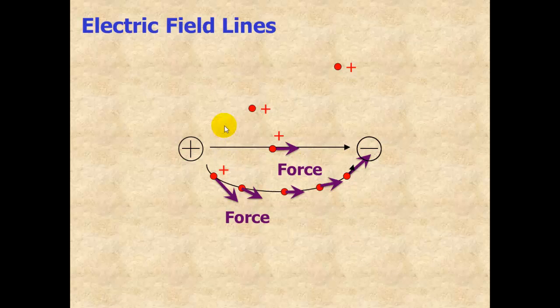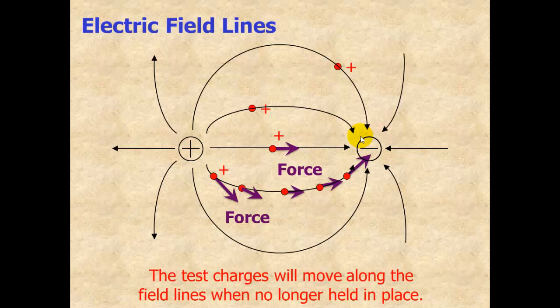By symmetry, we can see that if we put these positive test charges anywhere in this field, it's always going to be repelled away from the positive and toward the negative charge. So we end up getting a distribution, an electric field that looks like this.